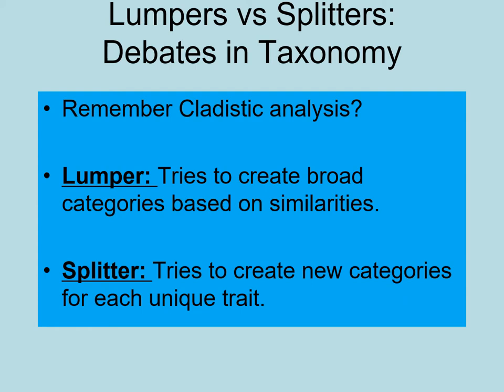Within any given species there's going to be a wide range of variation. And remember, fossilization itself is very rare, so we're only seeing the most common phenotypes. How do we really know if this is an actual new species or just part of the range of variation for one of the species we have already discovered?